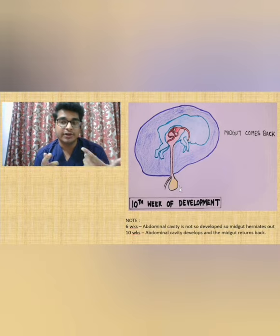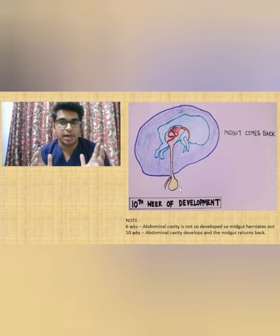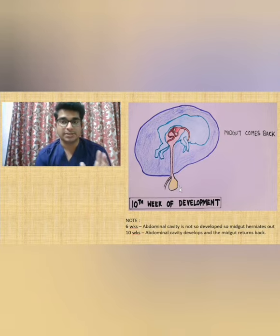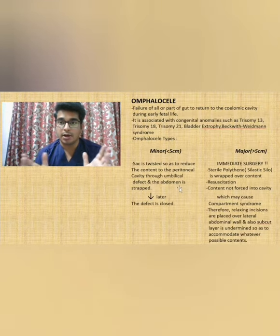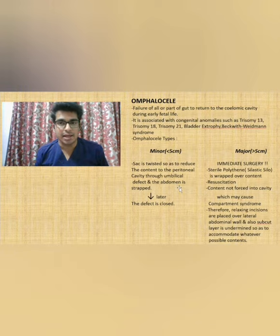Now, what happens if it fails to get back inside? There will be a persistence of the physiological hernia, and this condition is known as Omphalocele — when the intestinal loop fails to return into the abdominal cavity. Breaking down the word: 'omphalos' means umbilicus, and 'cele' refers to something herniating out or a swelling.